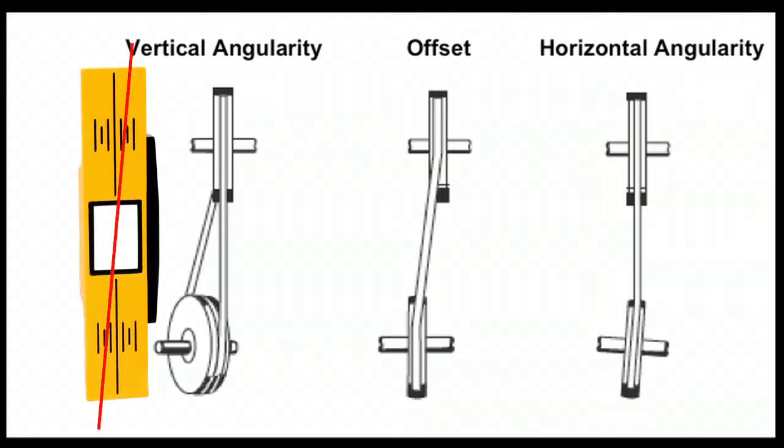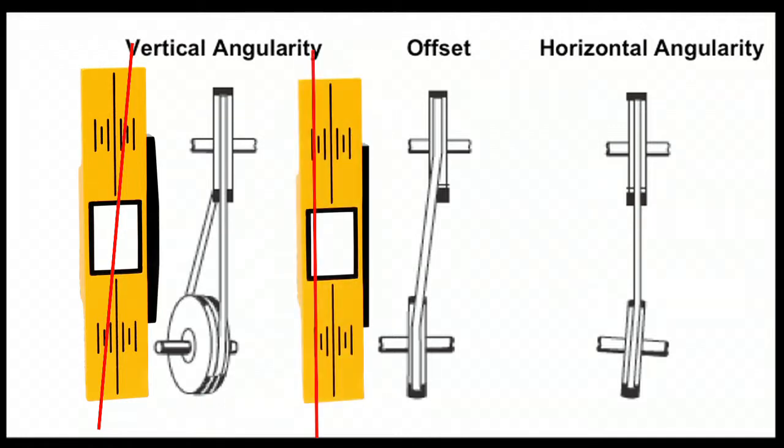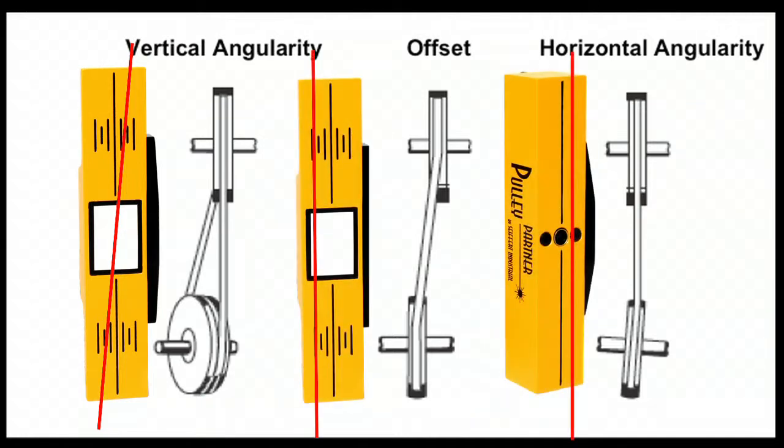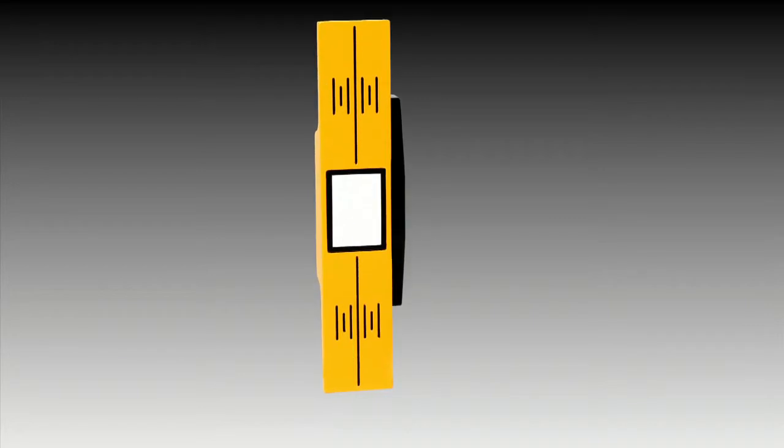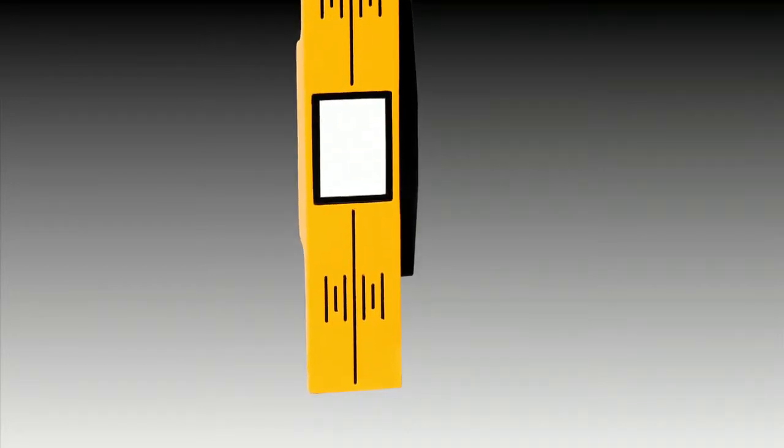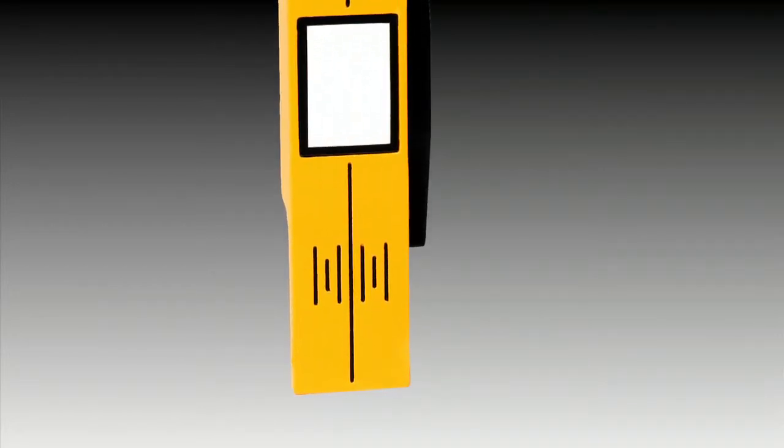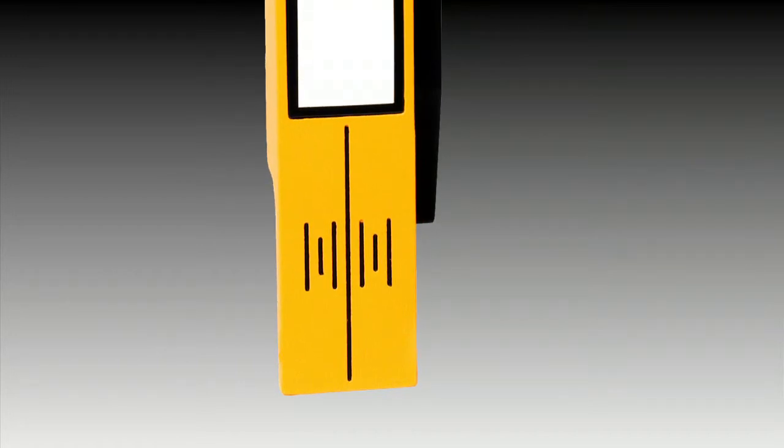The position of the transmitted laser line on the reflector indicates vertical angularity and the offset. Horizontal angularity is indicated by the position of the reflected laser line onto the transmitter. For different pulley edge thicknesses, use the offset marks on the face of the reflector to establish the amount of offset. These marks are in eighth-inch increments.